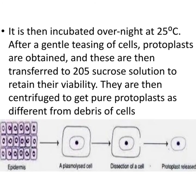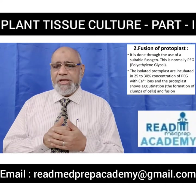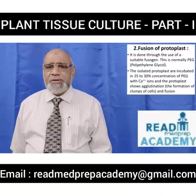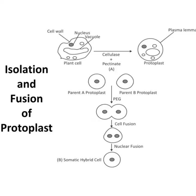Fusion of protoplasts is done using a suitable fusogen — normally polyethylene glycol (PEG). The isolated protoplasts are incubated in 25–30% concentration of PEG with calcium ions; the protoplasts show agglutination — the formation of clumps — and fusion. In the image, protoplasts are formed from plant cells using cellulase and pectinase. Parent A protoplast and Parent B protoplast are fused together by PEG, causing cell fusion, then nuclear fusion, resulting in formation of a somatic hybrid cell.